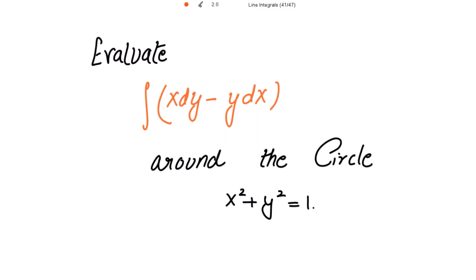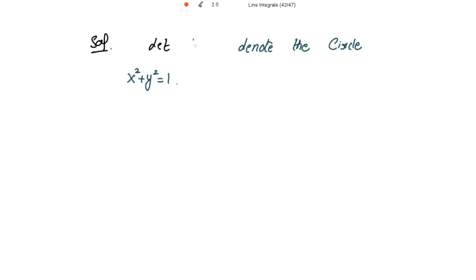To evaluate the integral of xdy minus ydx around the circle x squared plus y squared equal to 1. Let's denote the circle x squared plus y squared equal to 1 and what are the parametric equations of the circle?